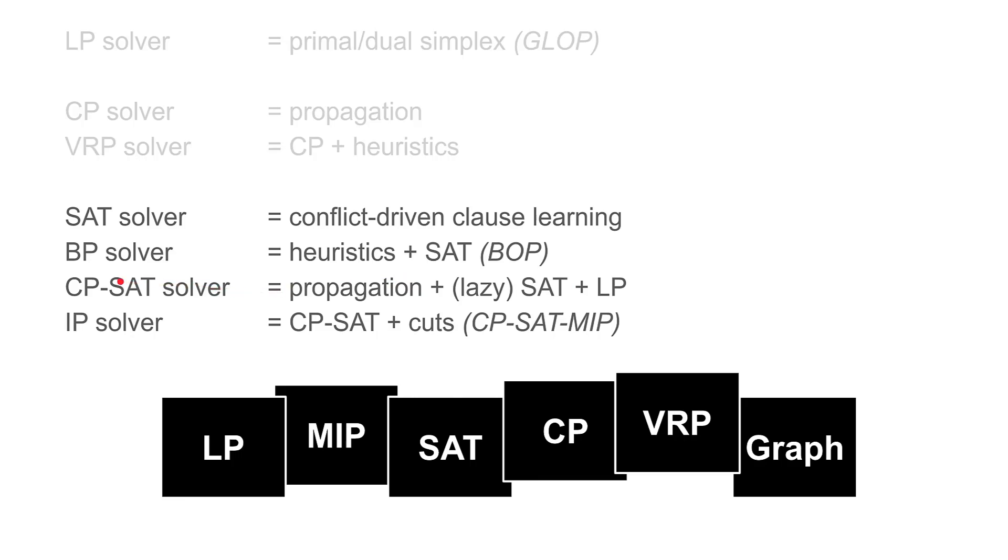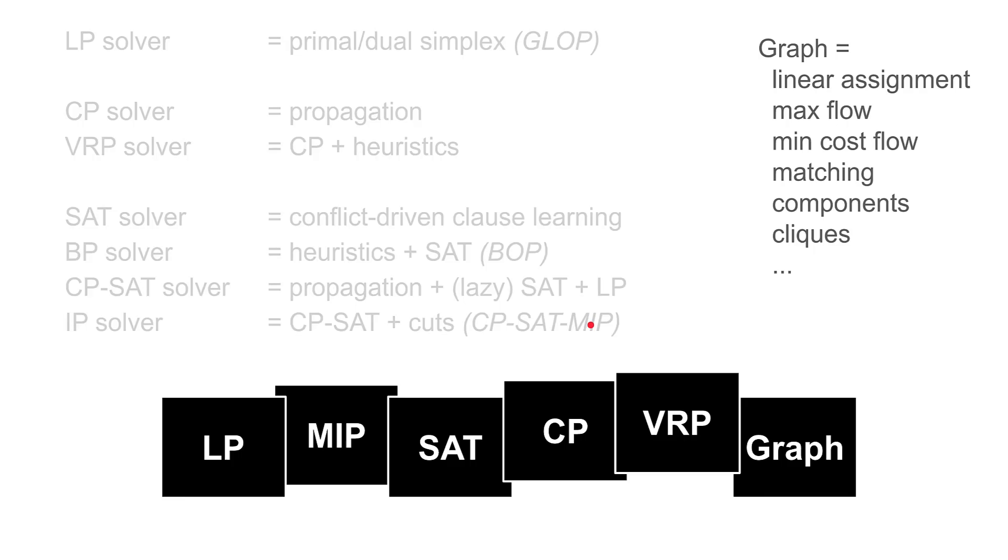Then of course we have the flagship, which is CP-SAT. This is a constraint programming solver based on SAT. It also has propagations, but it also has instantaneous translation to SAT to learn new clauses, and it also uses LP. It's really a mix of many different techniques. The reason why VRP solver uses the old CP solver is that in the old CP solver there is a range of heuristics dedicated for VRP which are not present in the CP-SAT solver.